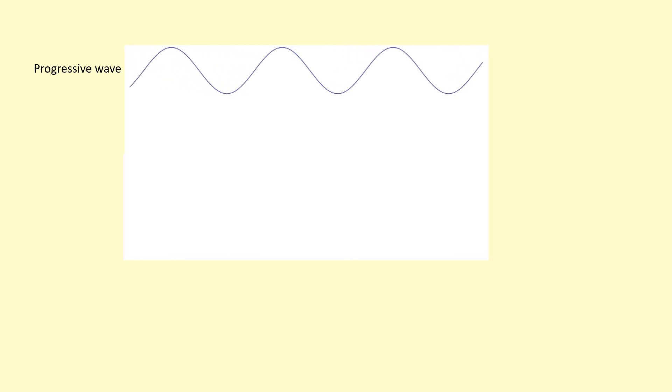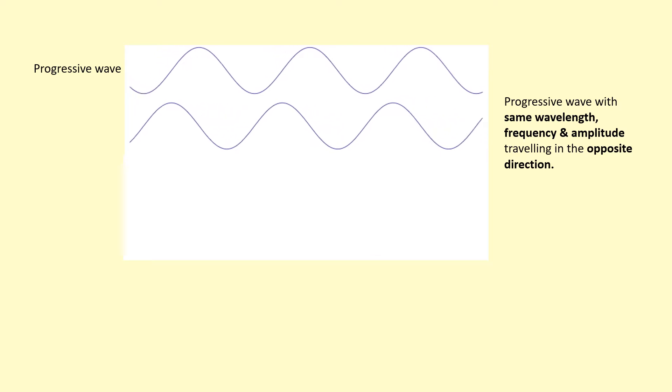Here we have a progressive wave that's transferring energy towards the right. Let's say there's another wave with the same wavelength and frequency and amplitude that's traveling in the opposite direction, basically transferring energy towards the left. Let's say these two waves meet and they superpose.